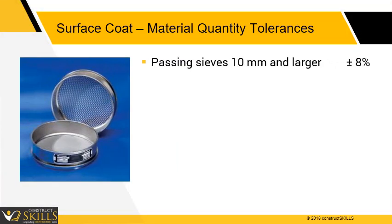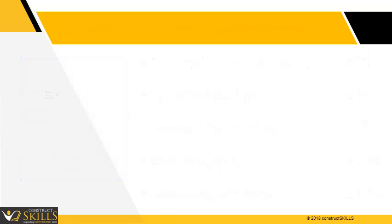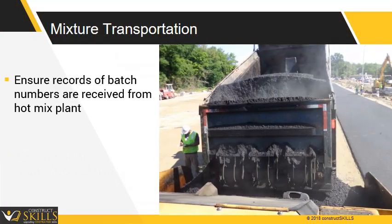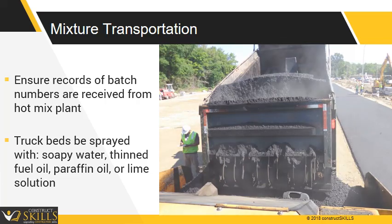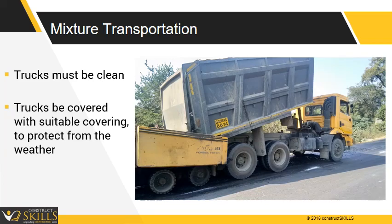Allowable Tolerances. As water leads to deterioration of bitumen road, it is essential to have a void-free mixture. Various tolerances are listed in the shown table. Overall, the weight of each size calculated per design mix should not vary by more than 5%, and the temperature of mix should not vary by more than 15%. Carpets are laid in single or double courses; the total thickness varies from 60 mm to 120 mm. Ensure a proper batch report is received at site with each truckload. The truck beds should be sprayed with limited amounts of soapy water, thinned fuel oil, paraffin oil, or lime solution. Trucks used for hauling must be clean and should be covered with suitable covering to protect the asphalt from the weather.